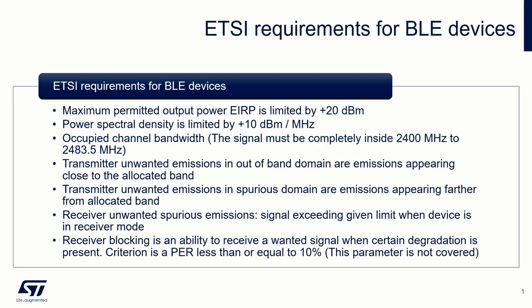Transmitted unwanted emissions in the spurious domain are emissions appearing farther from the allocated band when the device is transmitting; the band and its limit are specified by a table. Receiver unwanted spurious emissions are emissions at any frequency that exceeds a given limit when the device is in receiver mode.